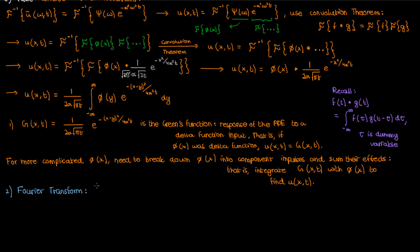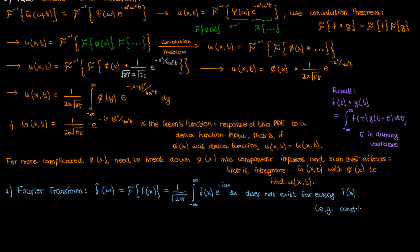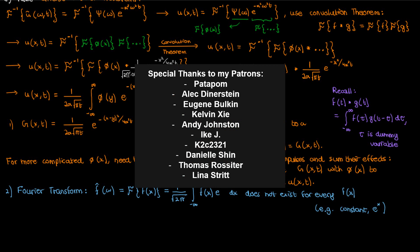The second point is that the Fourier transform doesn't always exist for every function. For instance, a constant function and an exponential function don't have Fourier transforms because the integral doesn't converge to a fixed value. So even functions that have Laplace transforms don't necessarily have Fourier transforms — something to keep in mind. Anyway, that should do it for the lesson. I'd like to thank the following patrons for supporting me at the $5 level or higher, and if you enjoyed the video feel free to like and subscribe. This is the Faculty of Khan signing out.